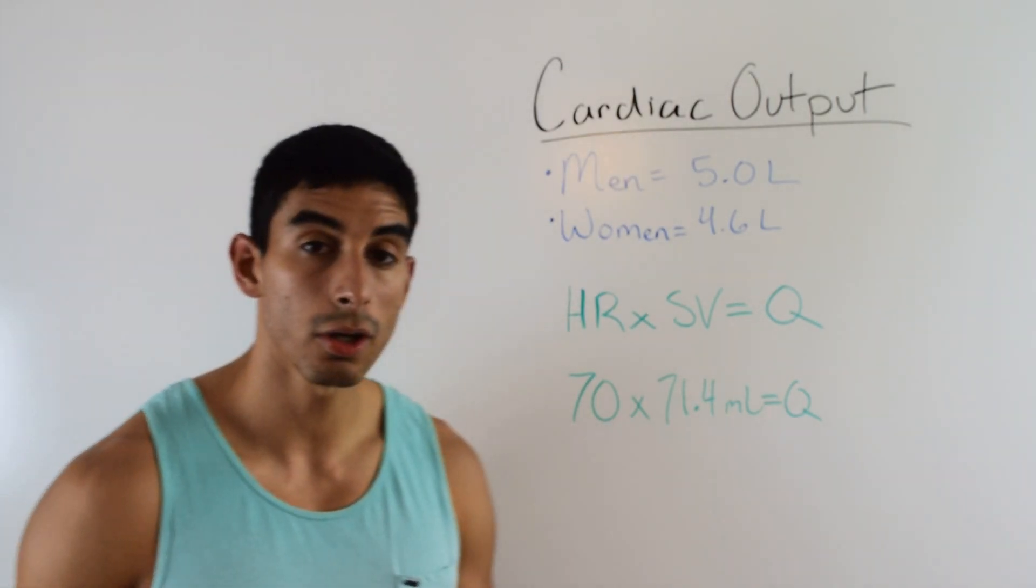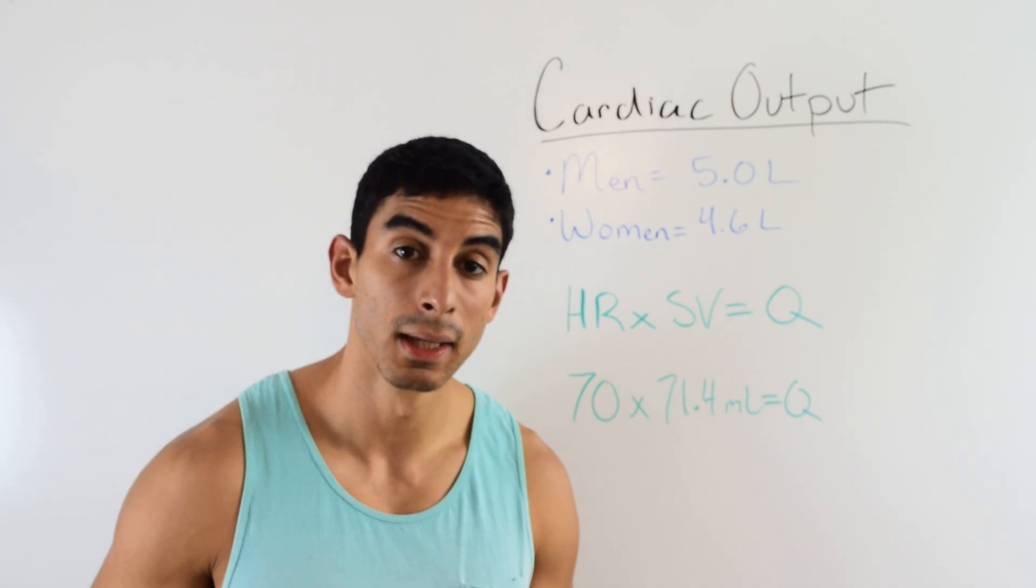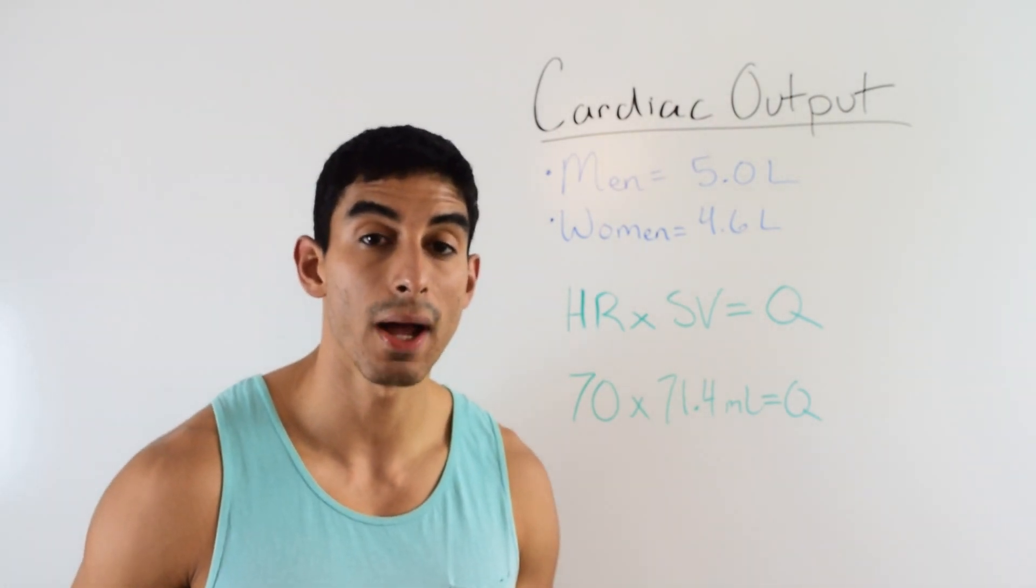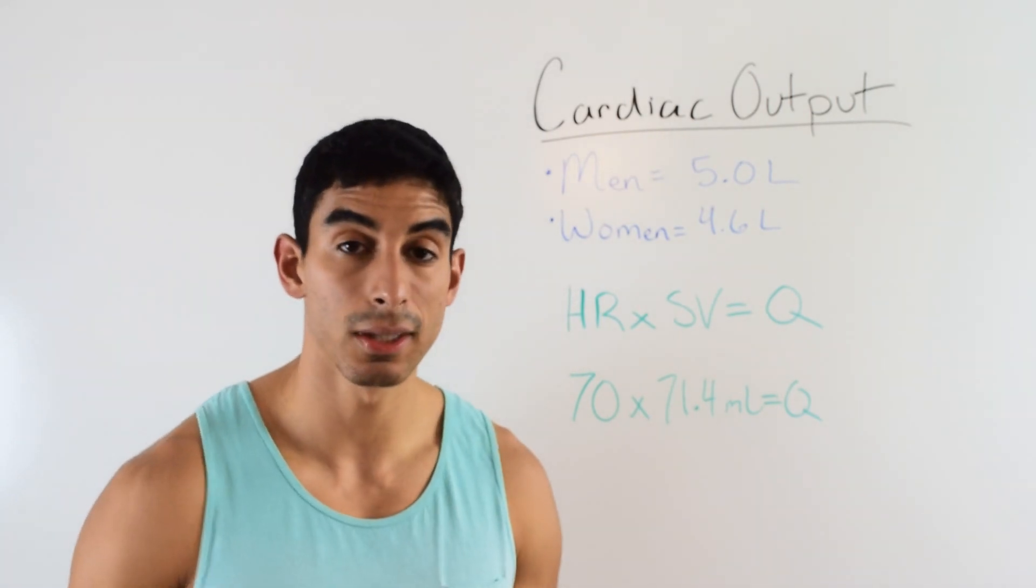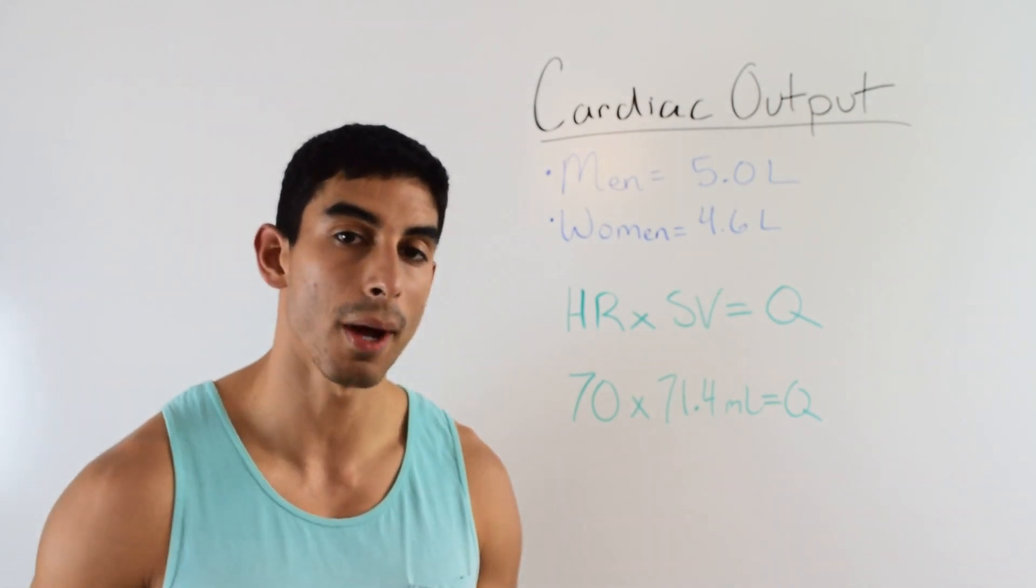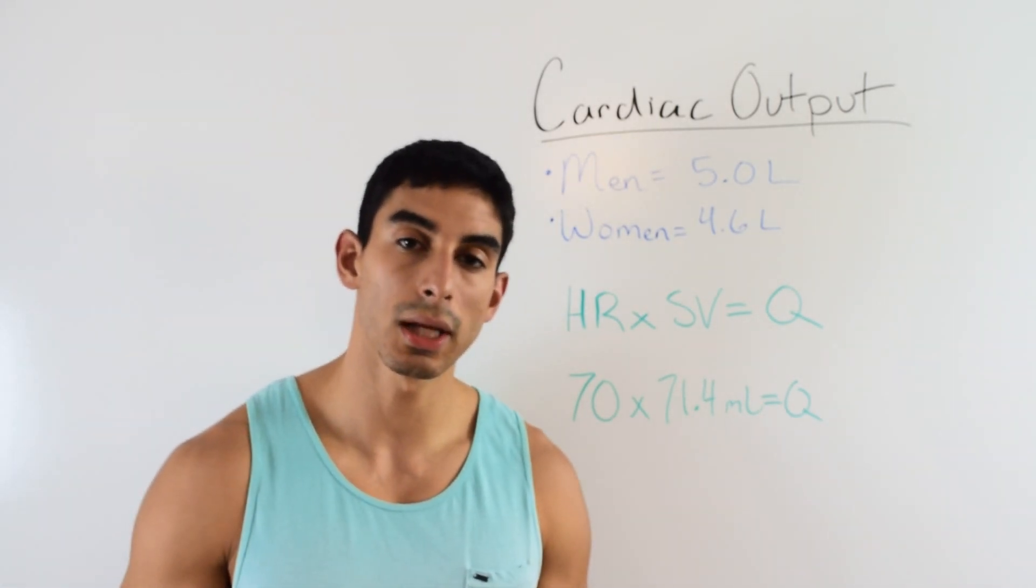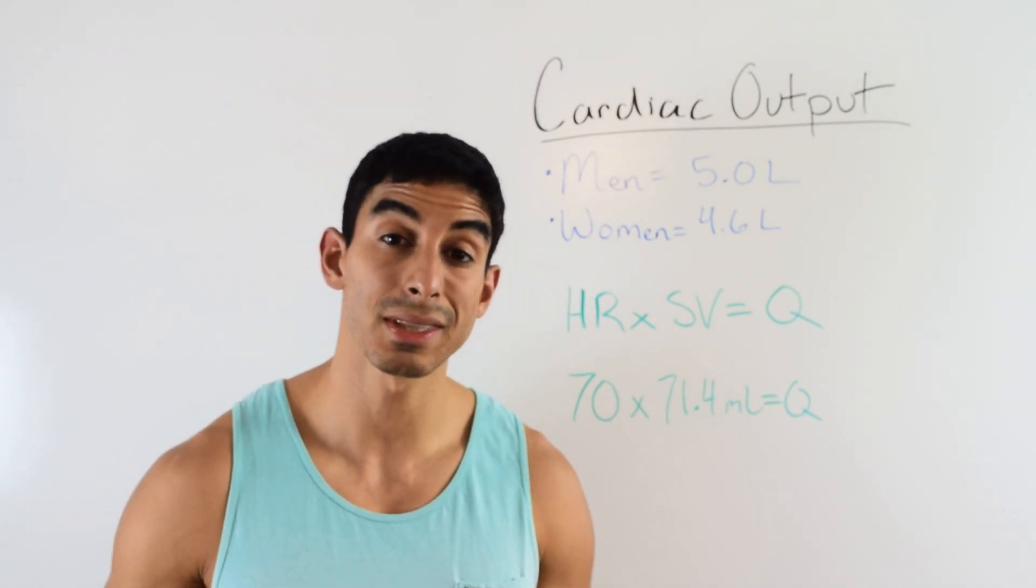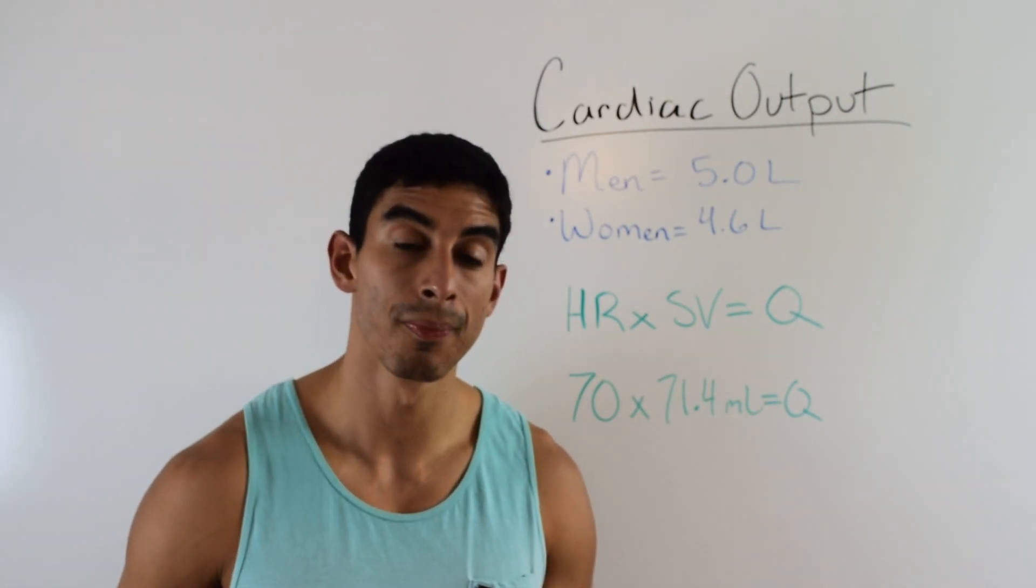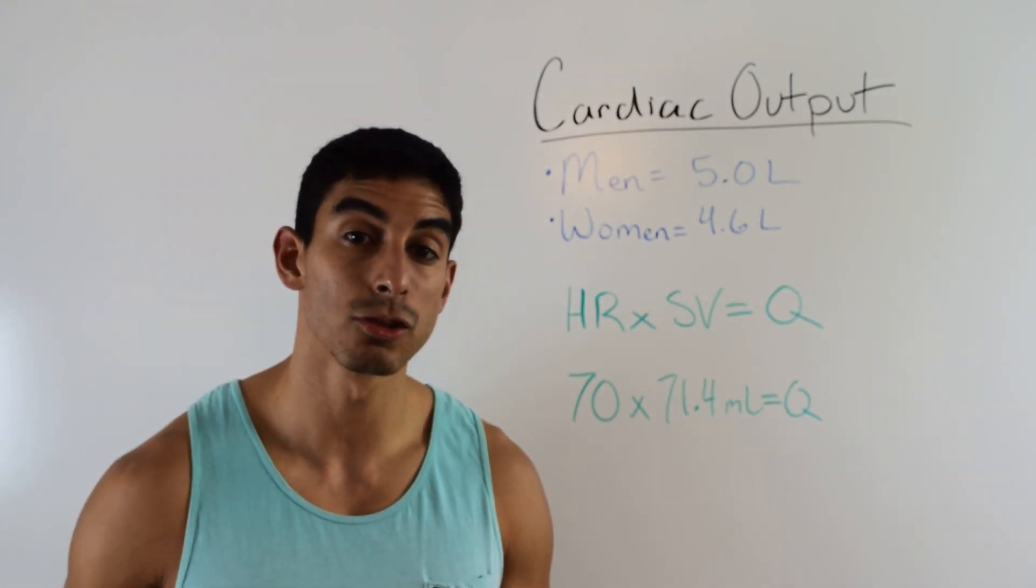So let me go ahead and talk about the averages. On average, a man has a cardiac output of about 5 liters per minute, and this is at rest. Like I said, this goes up significantly during exercise and it depends on the individual how much this is going to go up by. Now, women are going to have a slightly lower cardiac output, and that's because their heart's a little bit smaller. So usually they have about the same heart rate but a lower stroke volume, and so their output is going to be about 4.6 liters per minute.